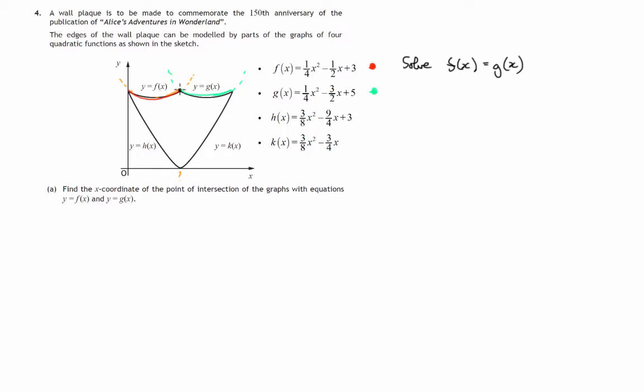So f(x) is one quarter of x squared minus a half x plus 3, and that has to be equal to one quarter x squared minus 3 over 2x plus 5.